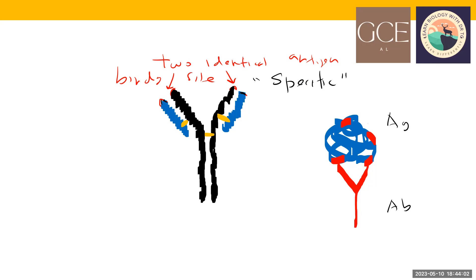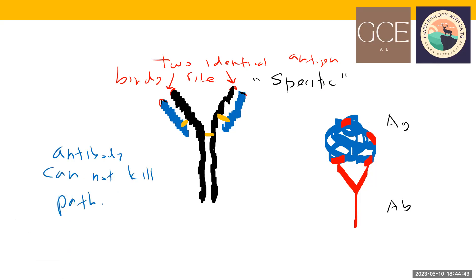Antibodies circulate all over the body and are produced very fast by plasma cells. They are a very powerful weapon in the immune system. Now, a very clear point: antibody cannot kill pathogens. Antibody is a group of proteins — it cannot kill pathogen.